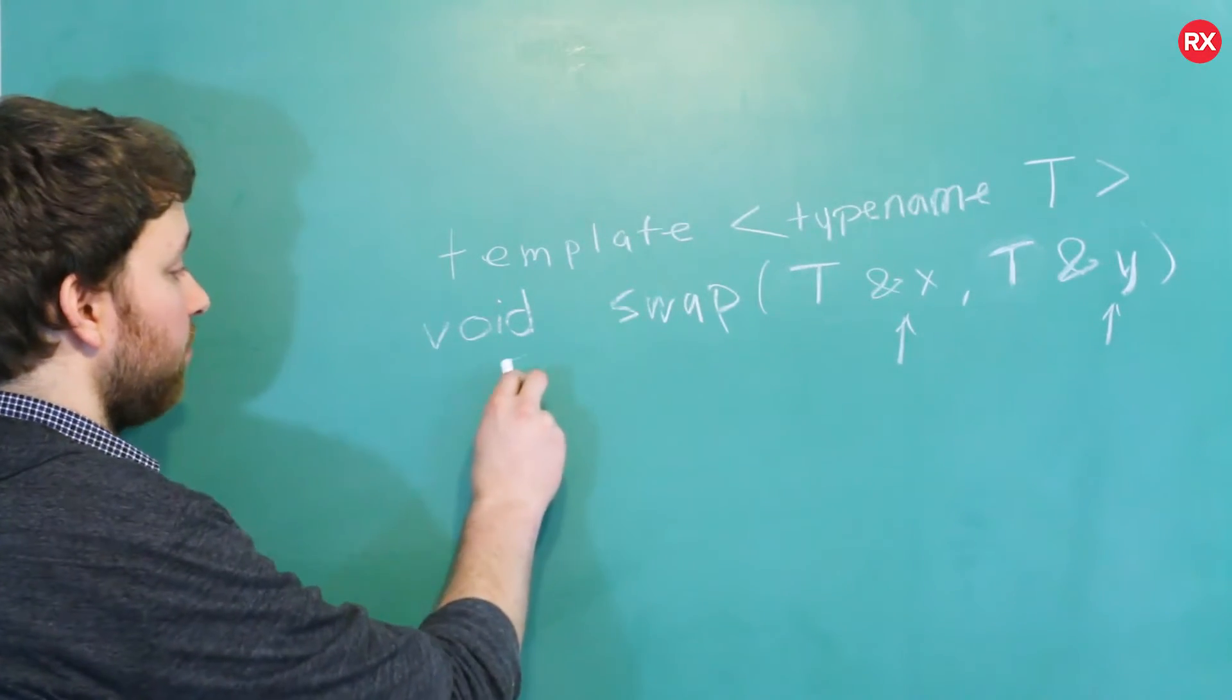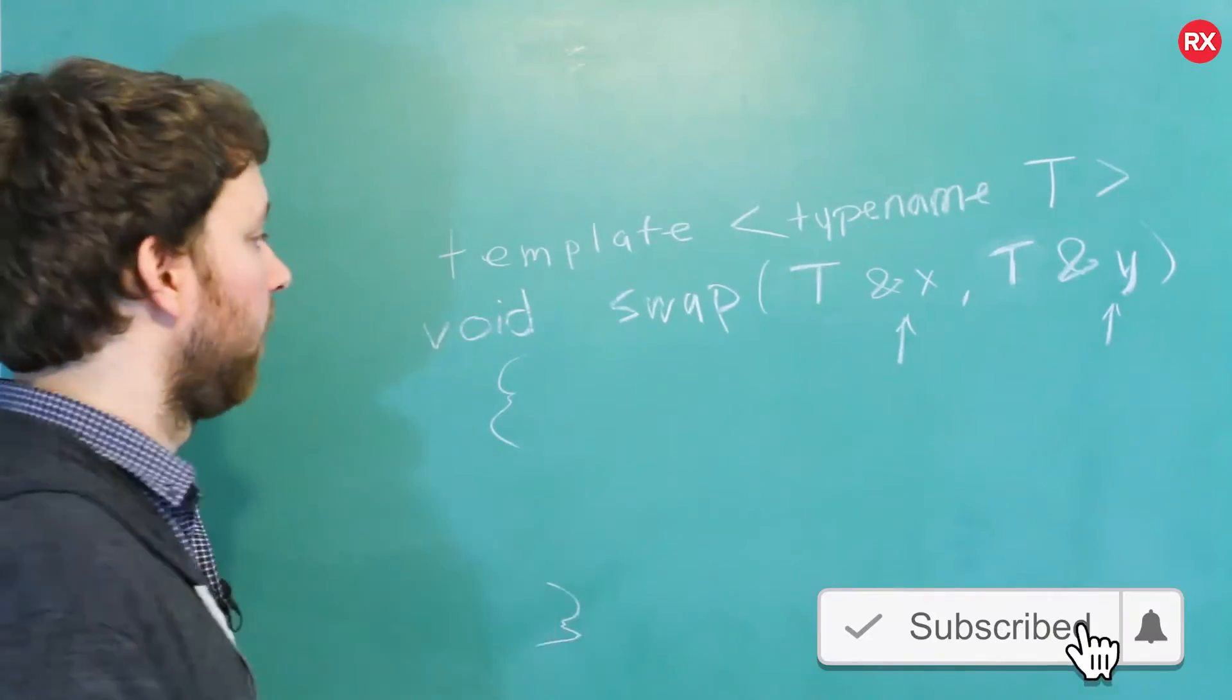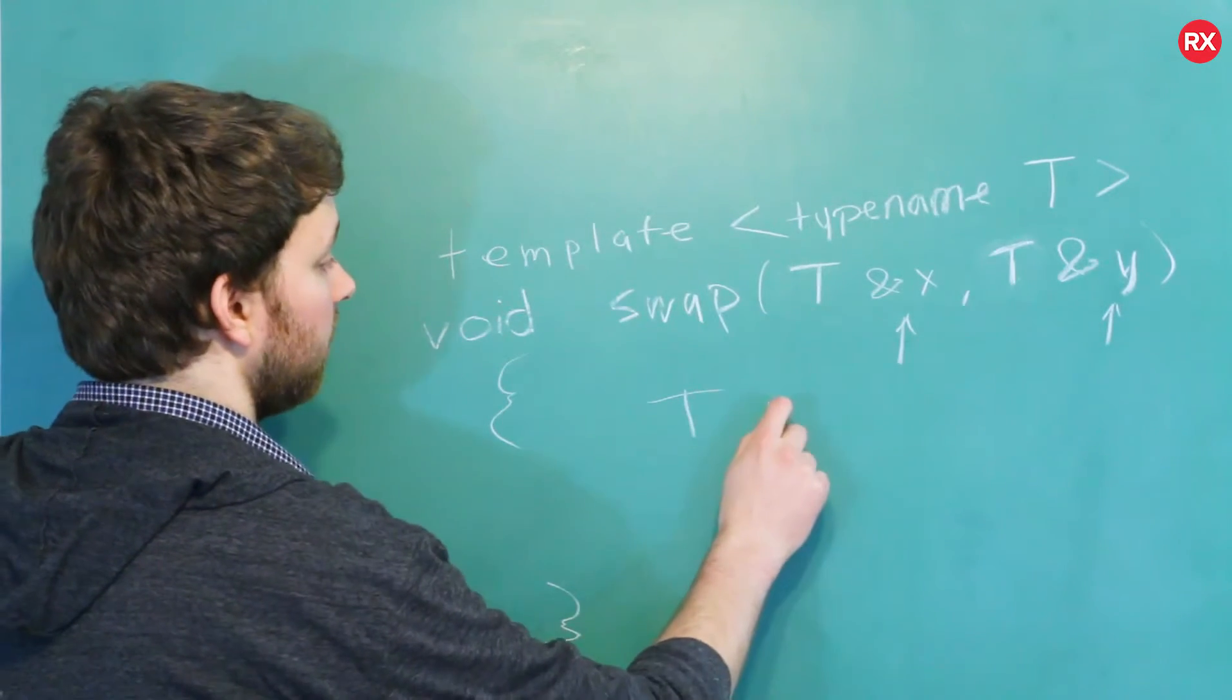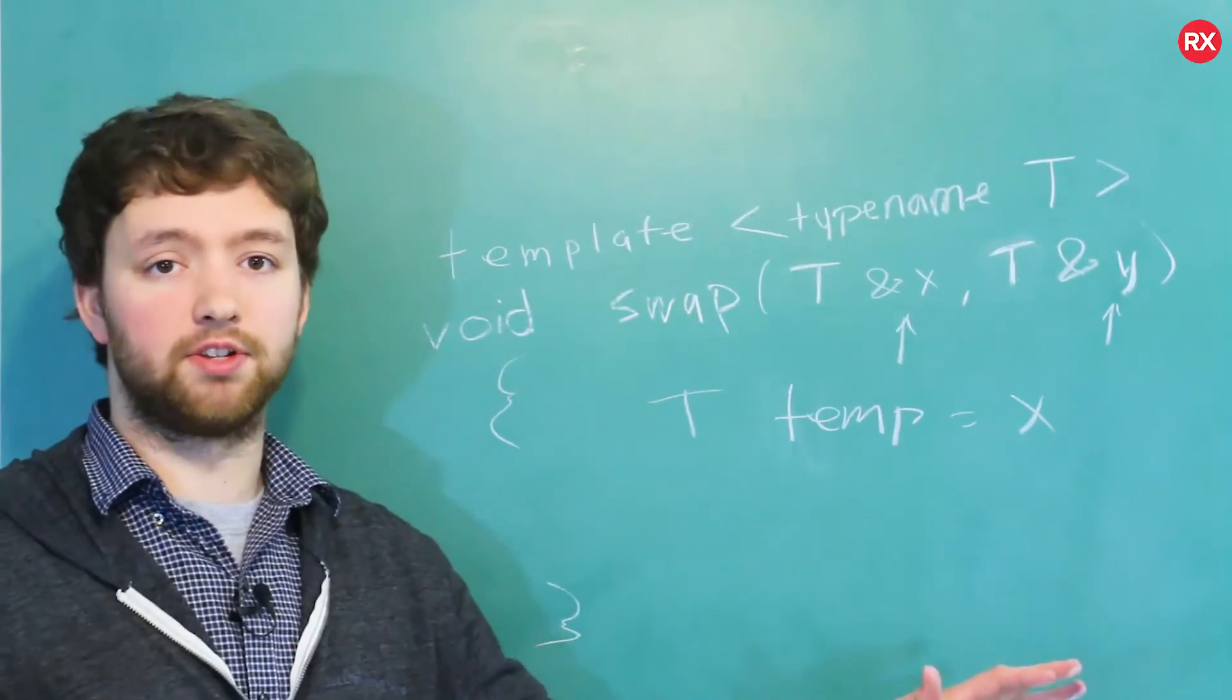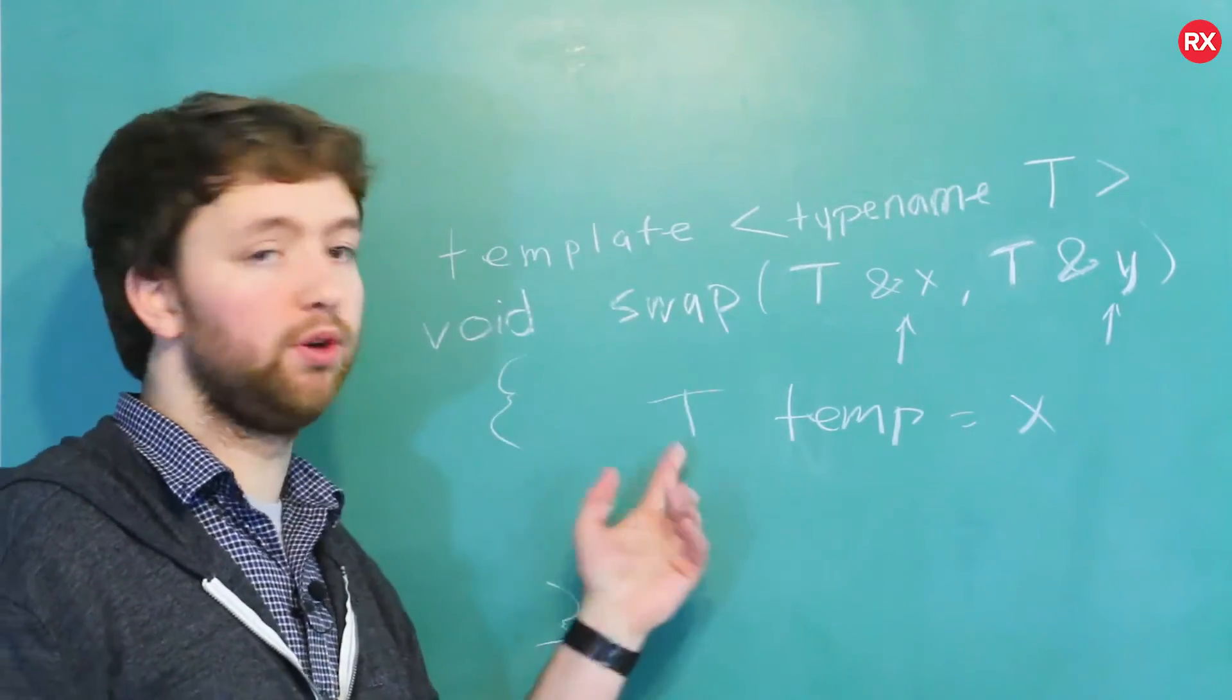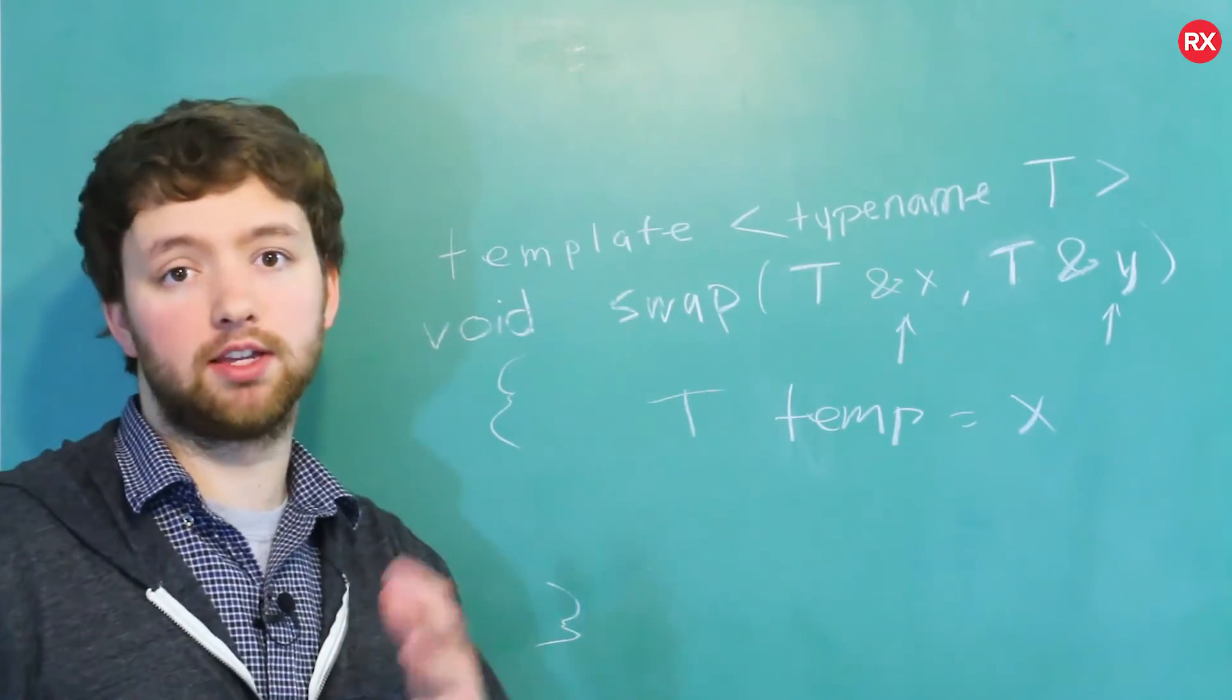Now, inside of the function body, we can use T as if it was an integer or a string. So we could create a variable of type T by saying T, and then giving it a name, such as temp, and you can assign it x, and so forth. So T is just used as if it's any other type. It makes sense in the context of a template, even though T is not an actual defined type. It's not like we created a custom class called T or anything like that.